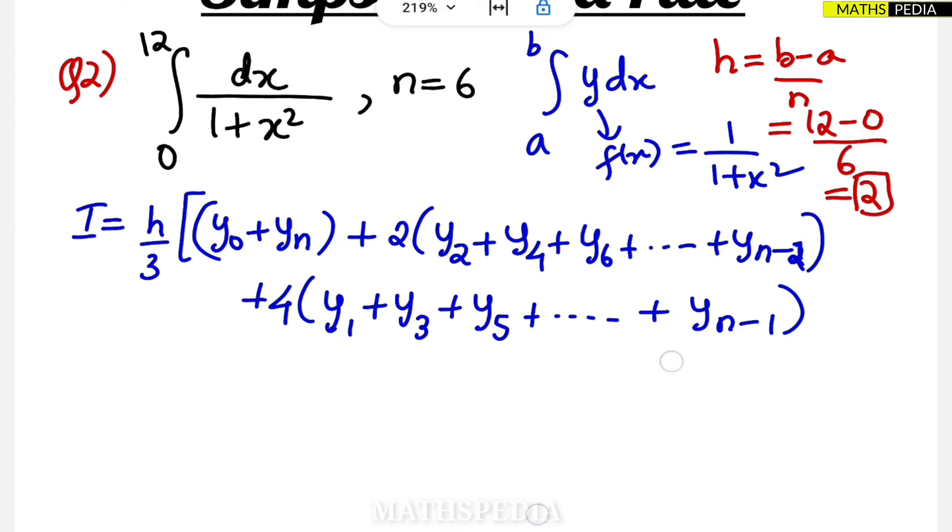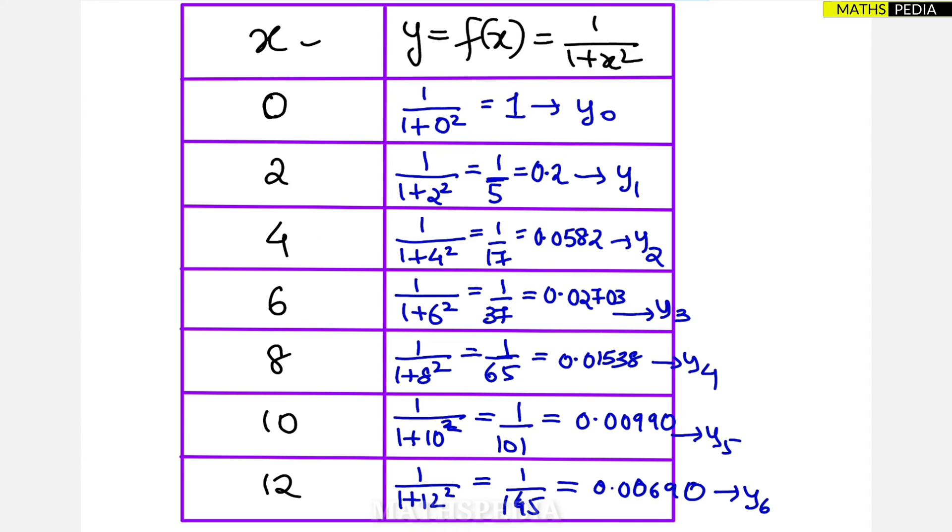By seeing the interval we have, h value we have, we have to form the table. So as we have discussed before in trapezoidal method it remains the same table since the interval is 6 only. There also we took interval as 6 and the function was same. So that's why the value also will remain same. So we are trying to understand comparison that how much difference is there, how much error is there.